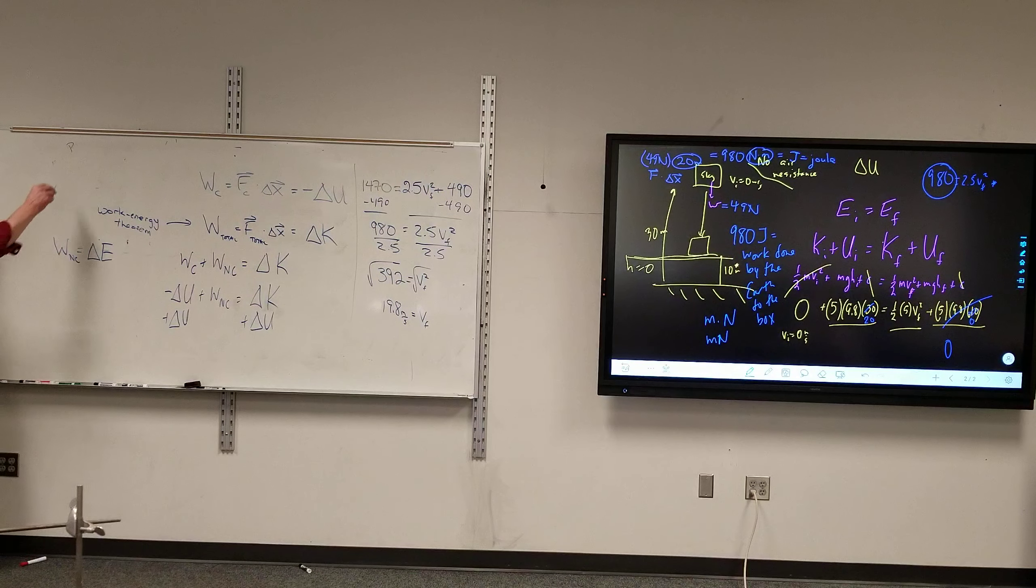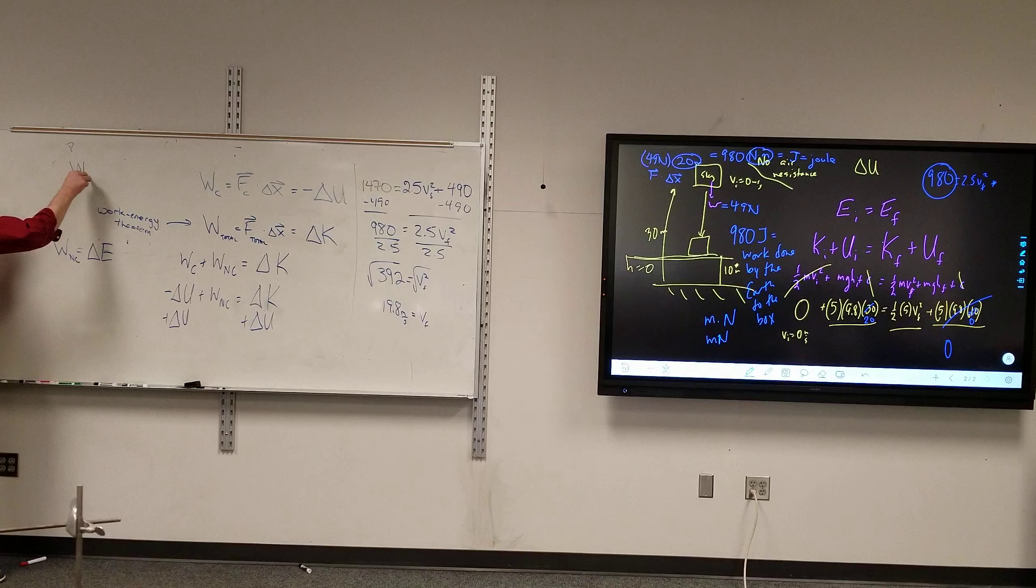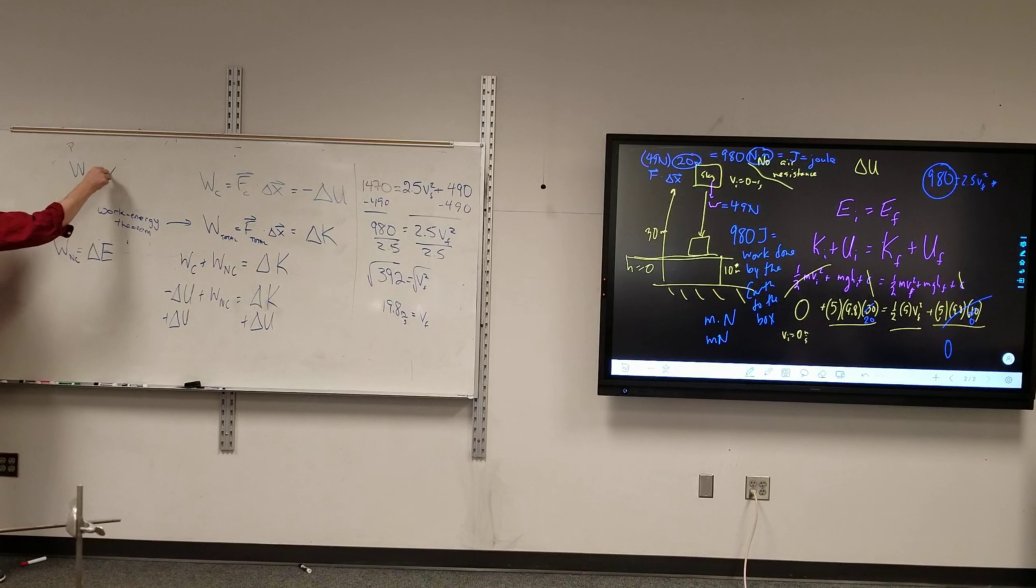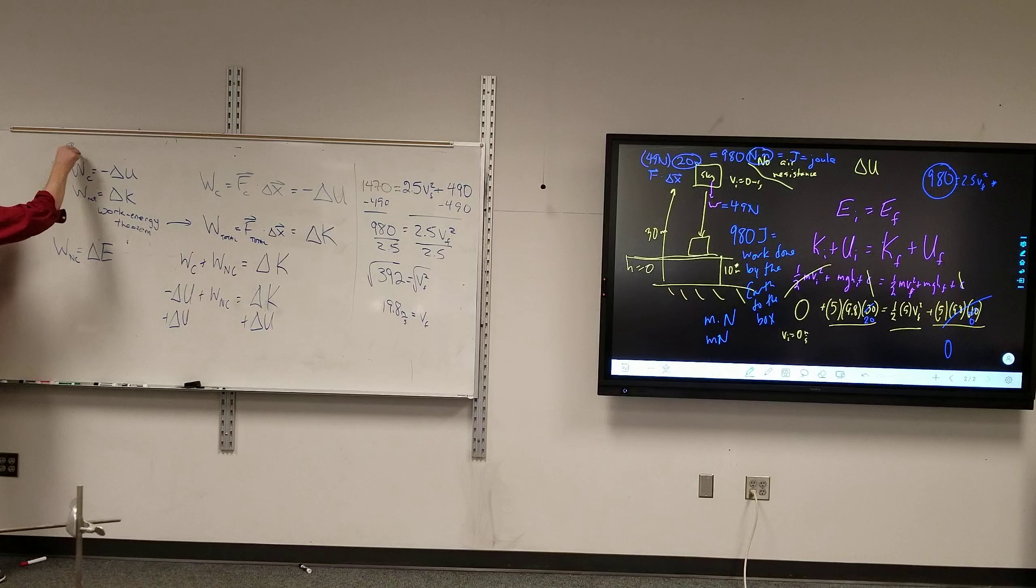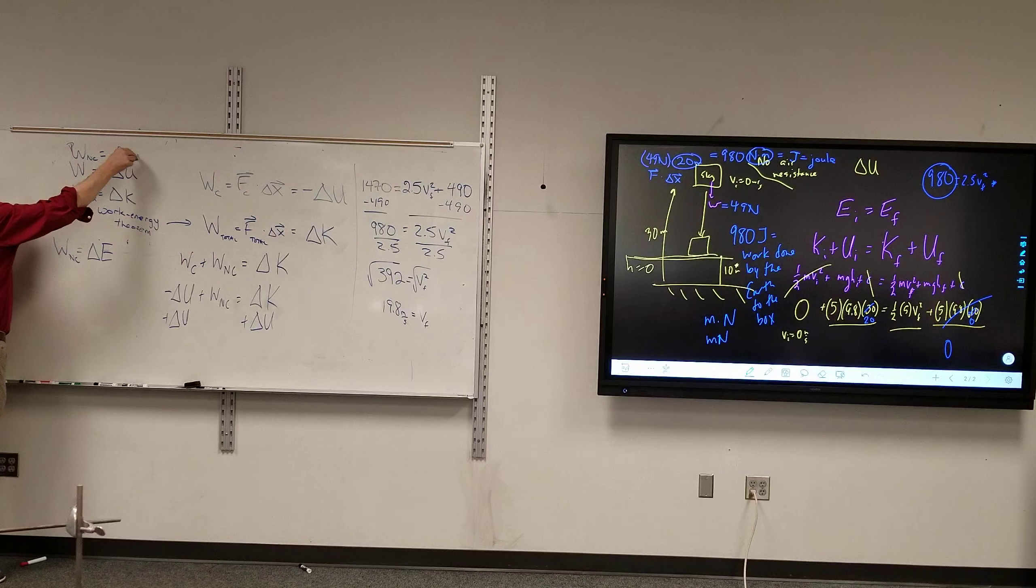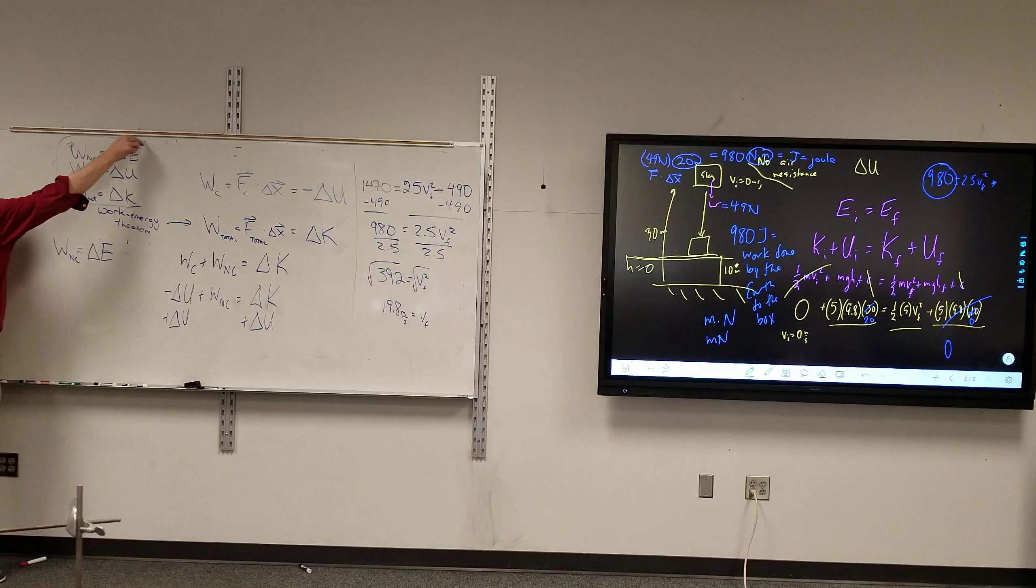So we have the three work-energy relationships. Work conservative equals negative change in potential energy. Work total or net equals change in kinetic. And work non-conservative equals change in total energy. The three work-energy relationships.